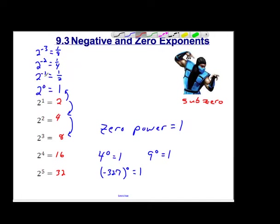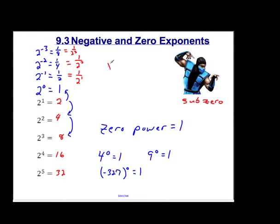So what's the rule here? 2 to the negative 1 equals 1 half — really that means I took that 2 and moved it to the bottom: it is 1 over 2 to the first power. 2 to the negative 2 is 1 over 2 squared, which is 1 over 4. The negative is moving it to the bottom of the fraction. 2 to the negative 3 is 1 over 2 cubed. So negative exponents flip it to the bottom. If I had x to the negative 5, I rewrite it as 1 over x to the fifth.